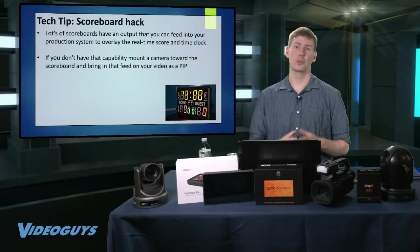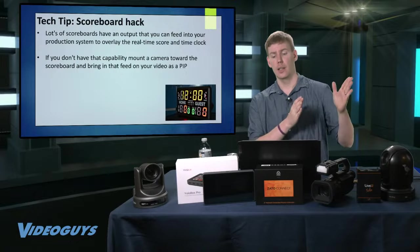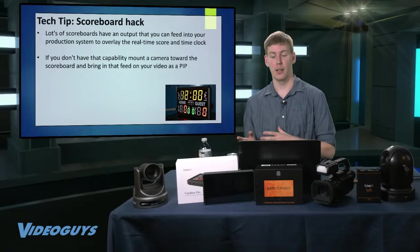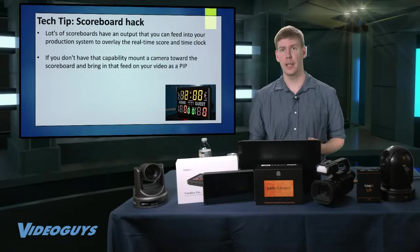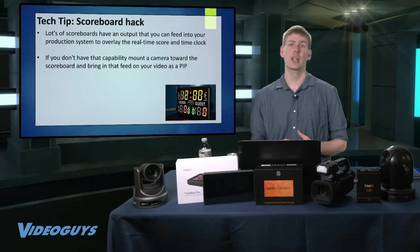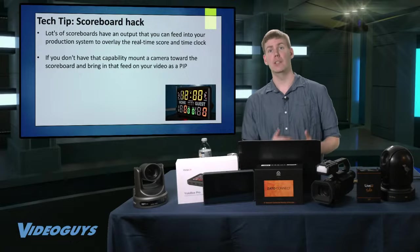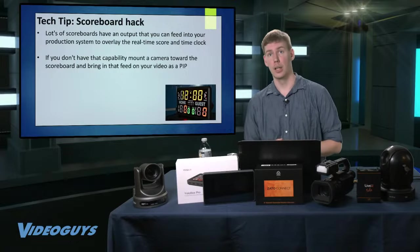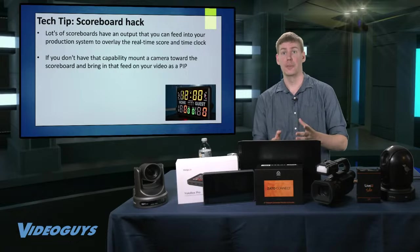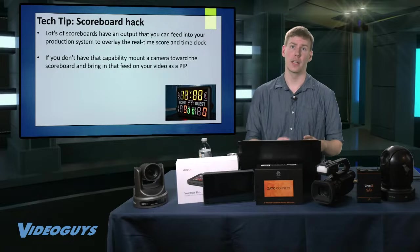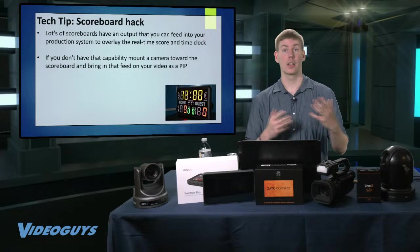A lot of professional scoreboards will actually have an output that you can plug directly into one of these turnkey systems, allowing you to automatically have an overlay of a real-time score and time clock. And a lot of these devices — the YoloBox Pro, Wirecast, and TriCaster — have scoreboards built into them, so that even if you can't get it automatically from your physical scoreboard, somebody can manually type in the numbers and update them as points are scored. The YoloBox Pro has a really robust scoreboard editing program inside of it, allowing you to change the font and colors to personalize it towards your school or your opponent's colors.